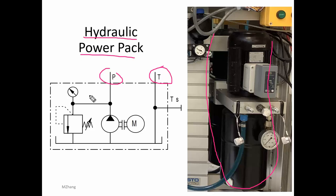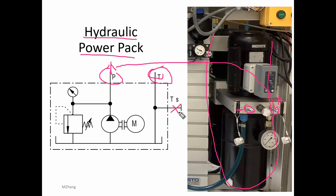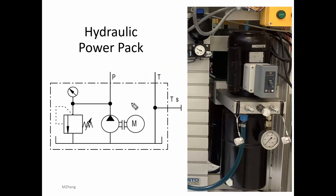Continuing from the previous video: from the hydraulic power pack, you have two ports. The P port is where the hydraulic oil comes out from the supply. The T port is called the tank port — you can see a little mark on the machine with a T. Those are the two main ports; the S port is called storage and is not our concern for now. Internally, you have an electric motor — represented by a circle — inside the tank, which has a mechanical link to drive a pump, similar to a water pump.